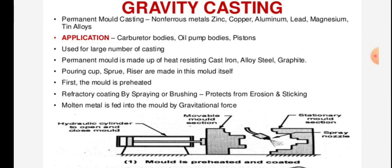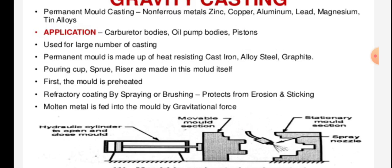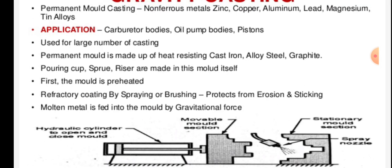The permanent mold is made up of heat-resisting cast iron, alloy steel, or graphite. Pouring cups and risers are made in the mold itself. First, the mold is preheated.